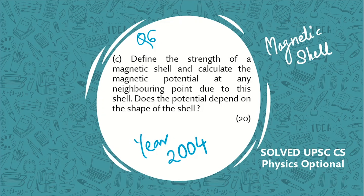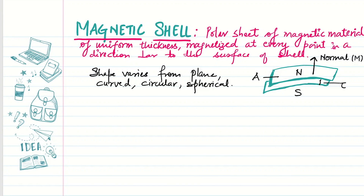Hello everyone. In today's video we'll be seeing this question from the year 2004. In this question we have to define the strength of a magnetic shell, then calculate the magnetic potential at a neighboring point, and lastly we have to see whether the potential depends upon the shape.